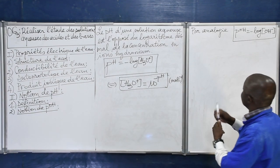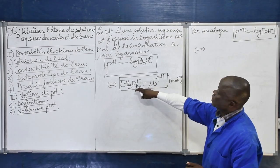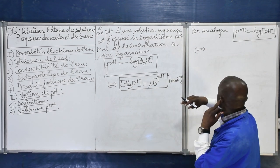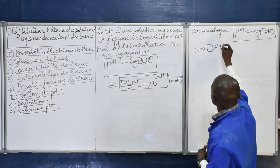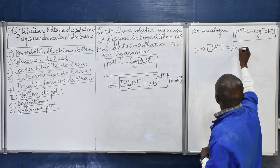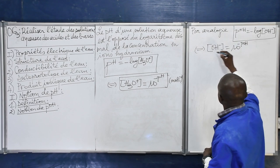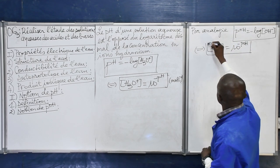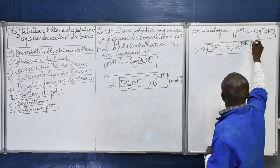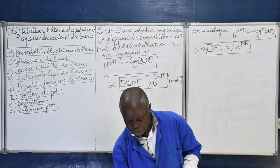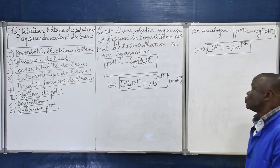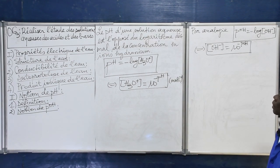Si on veut déterminer la concentration en ion hydroxyde, comme on l'a fait pour le pH, on aura donc [OH⁻] = 10⁻ᴾᴼᴴ. Le POH est l'opposé du logarithme décimal de la concentration en ion hydroxyde.